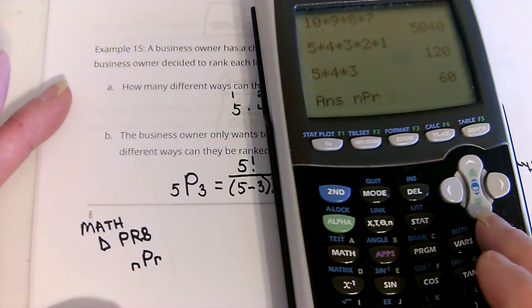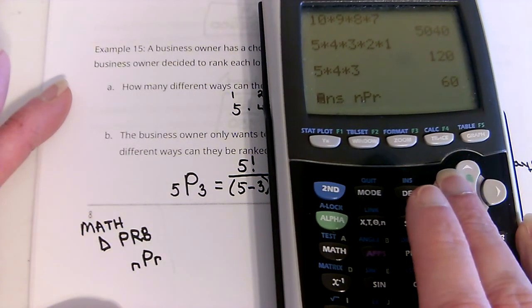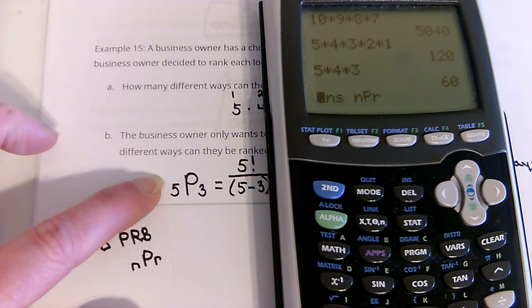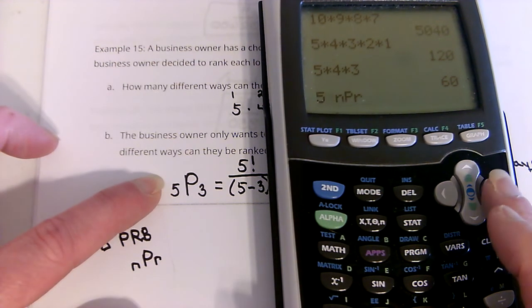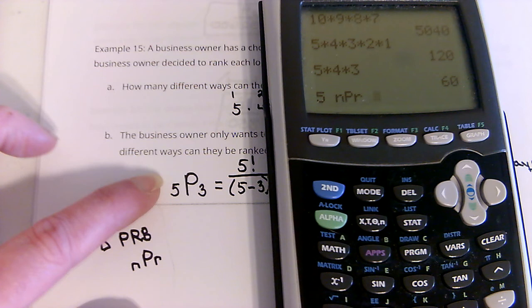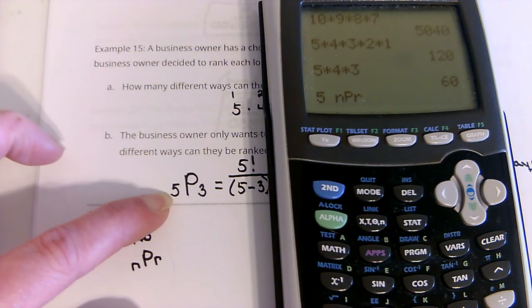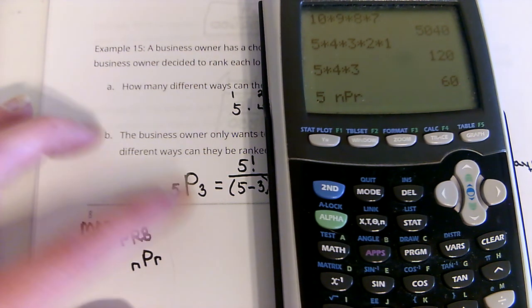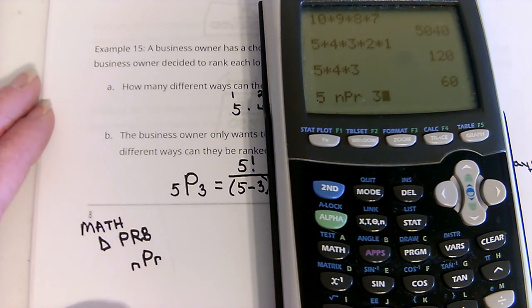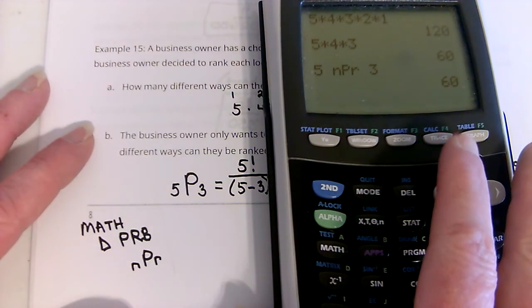It's an answer first. So, I need to start with what I'm picking from. So, the n has to go first. P and then 3. So, 5 pick 3. And it gives me the 60.